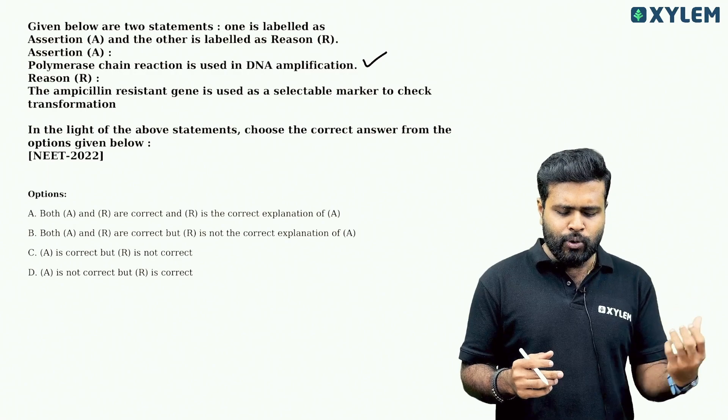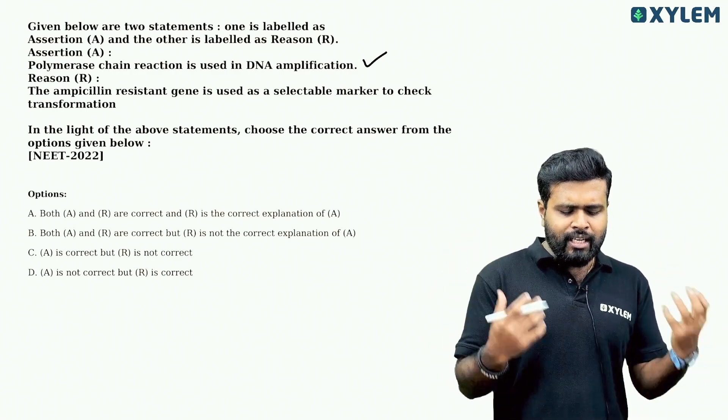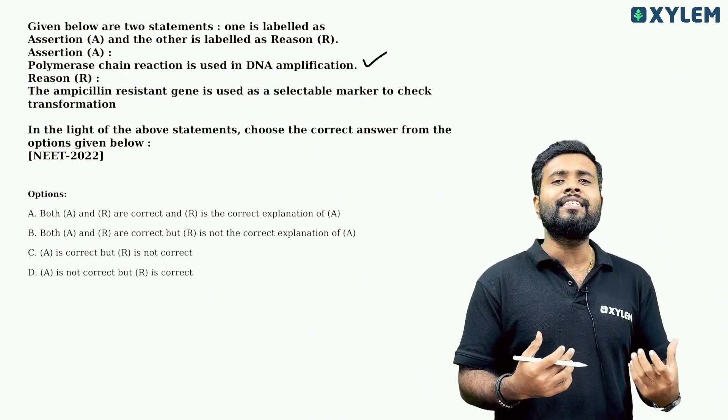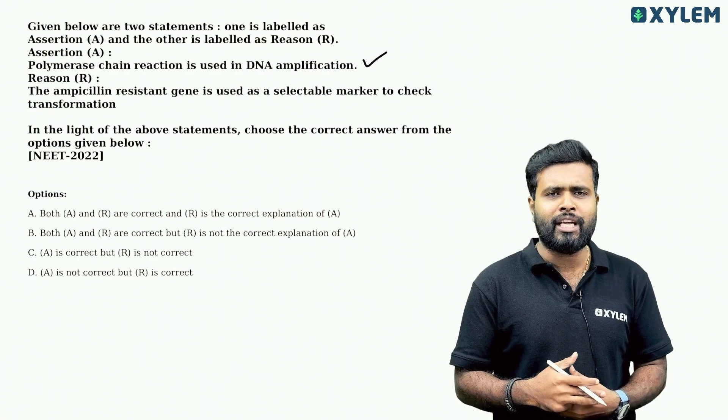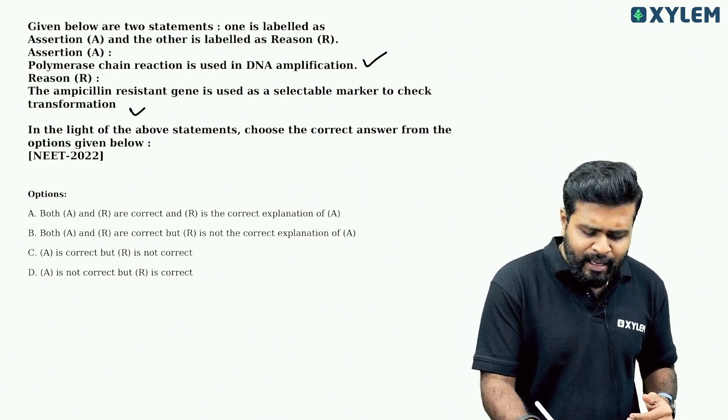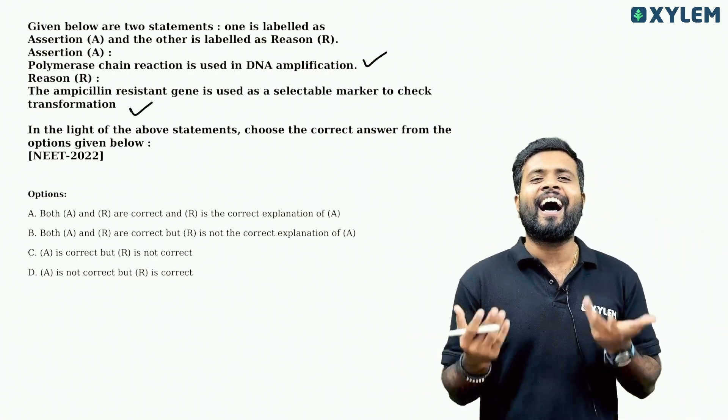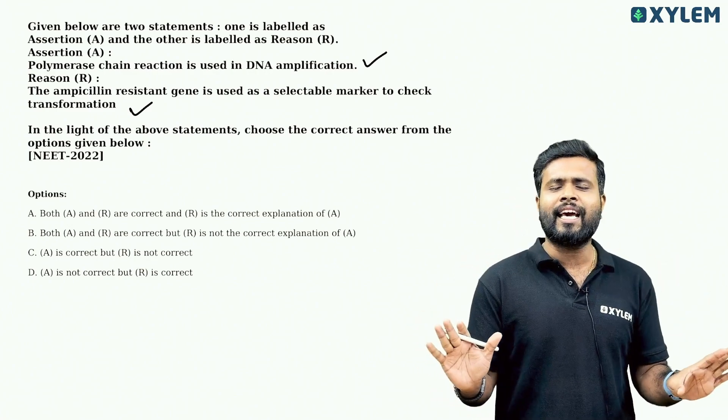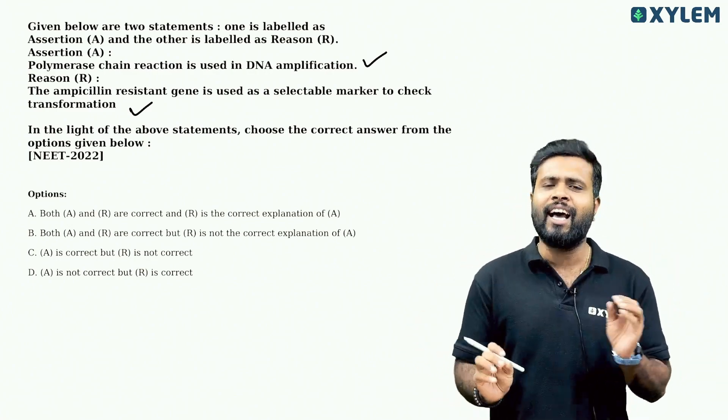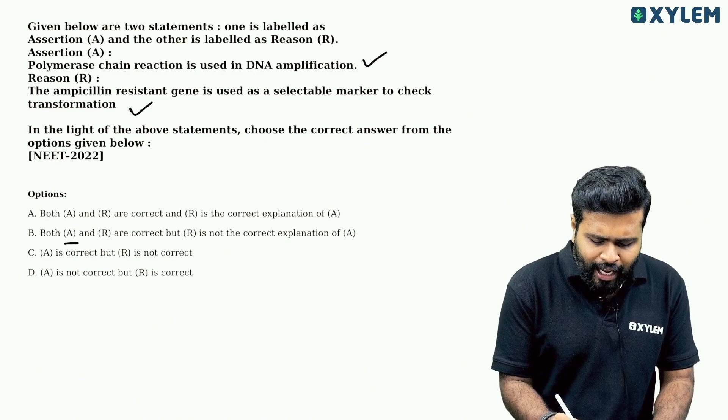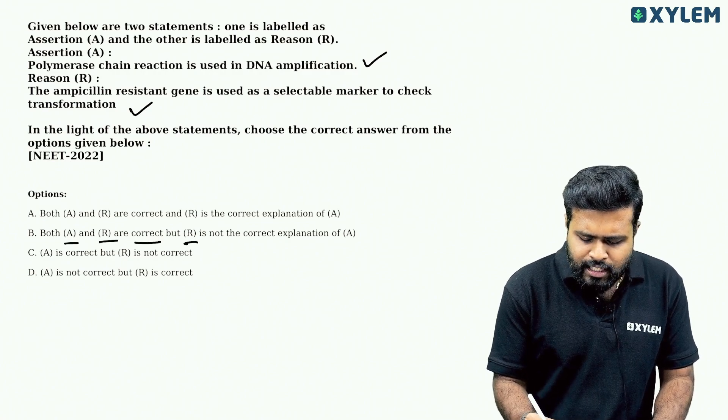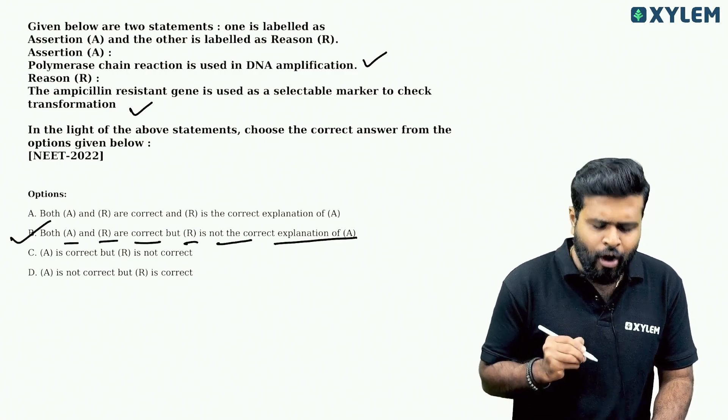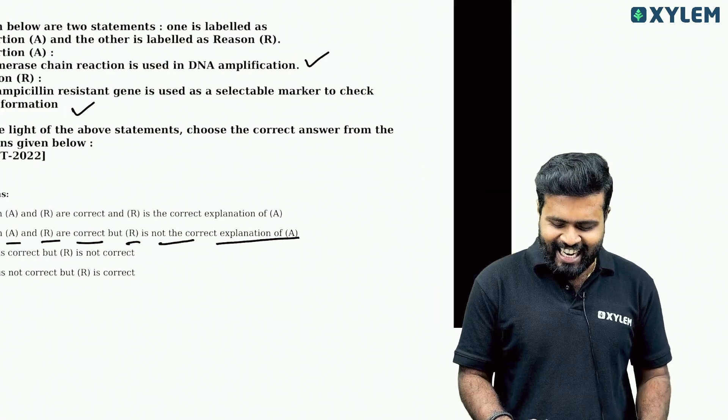The ampicillin resistant gene is used as selectable marker to check the transformation. Ampicillin is a selectable marker. So the reason is correct. Both A and R are correct, but R is not the correct explanation of A. Option B is the right answer.